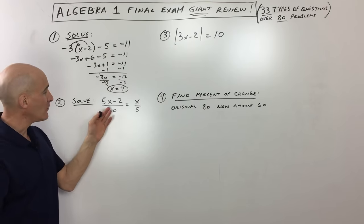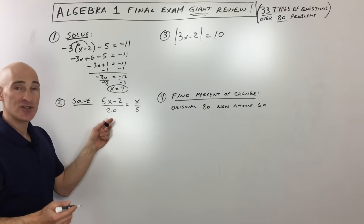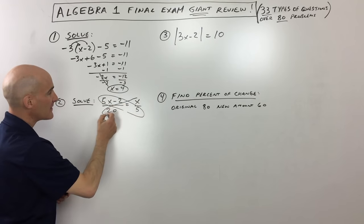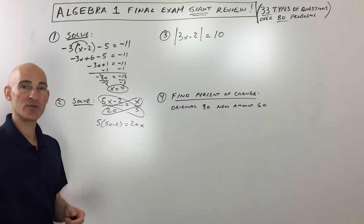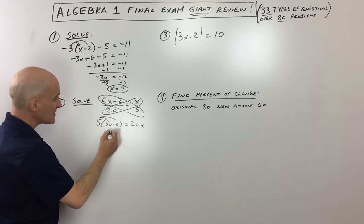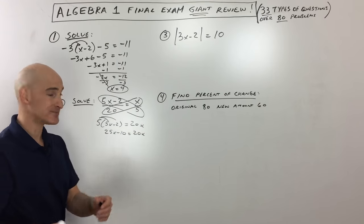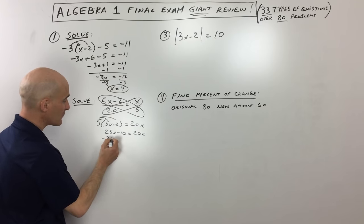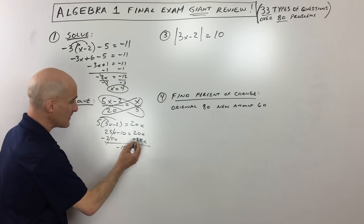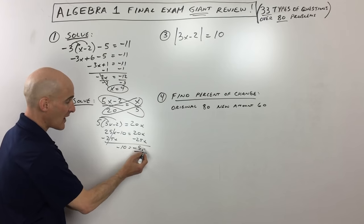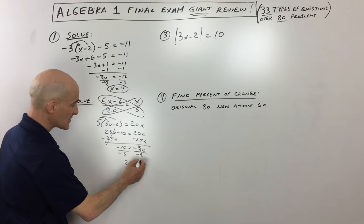The second problem says solve: 5x minus 2 divided by 20 equals x divided by 5. I would use the cross-multiplying technique, multiplying on the diagonals. So 5x minus 2 times 5 equals 20 times x. Distributing the 5 gives 25x minus 10 equals 20x. Subtracting 25x from both sides gives negative 5x equals negative 10. Dividing by negative 5, x equals 2.